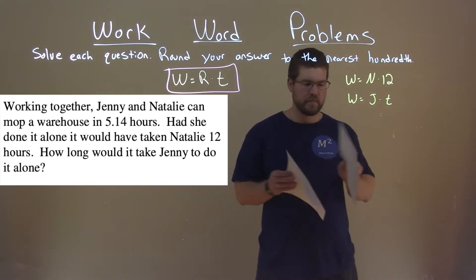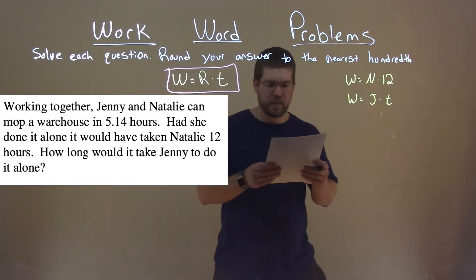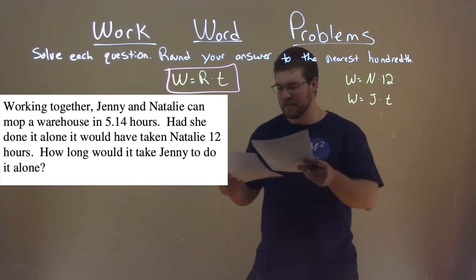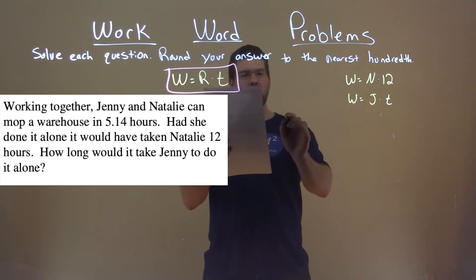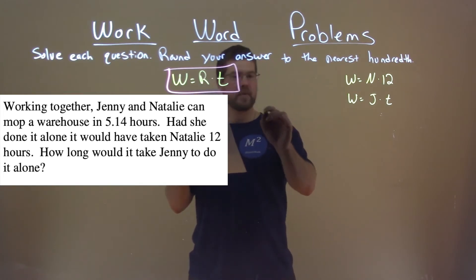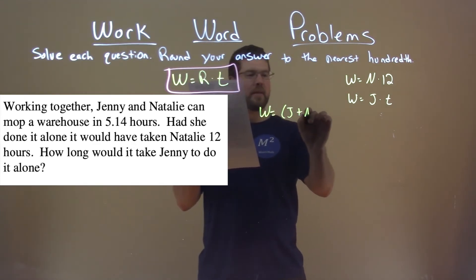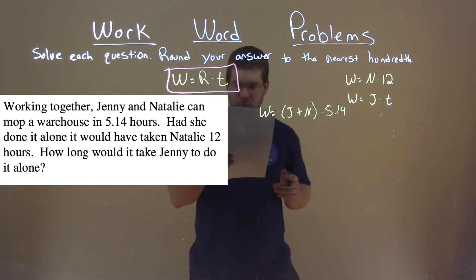One thing though, we do know is their work rate together. They tell us that total job they can do together if we take their work rates, we add them together, and 5.14 hours.